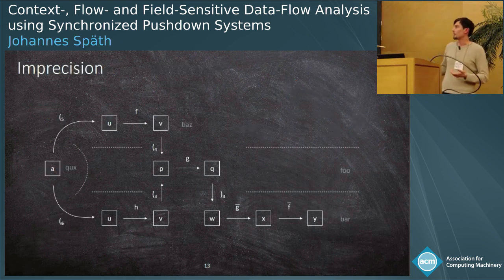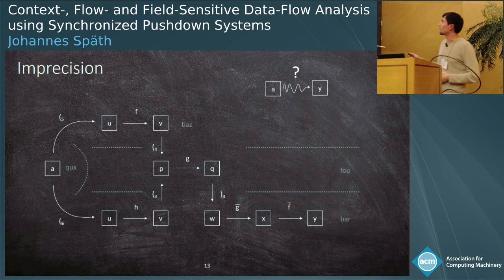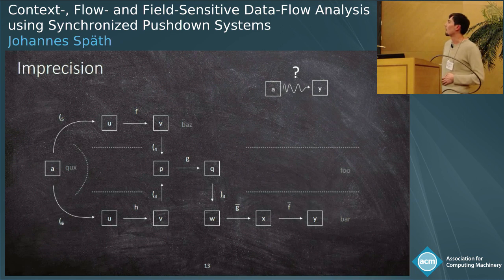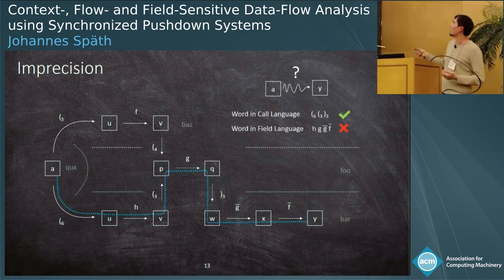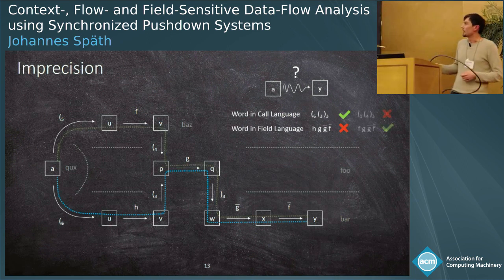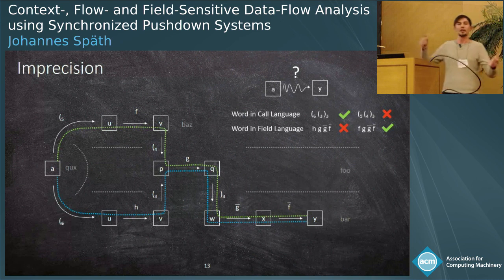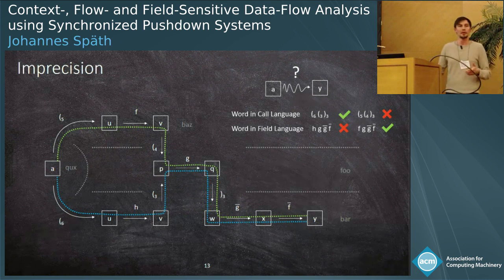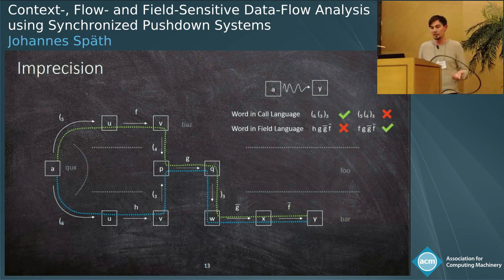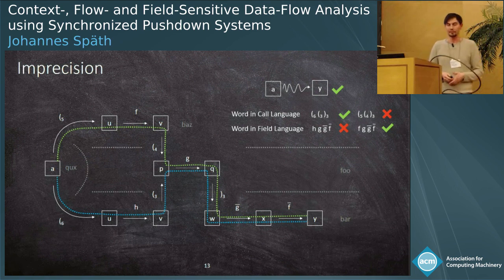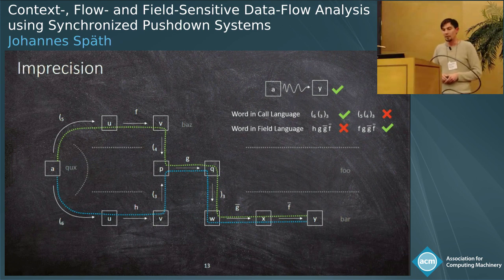And that's exactly where the imprecision happens. On this same extended graph, starting reachability from node A, you can see the blue path from before, but there is a second path where it's exactly the opposite: the path does not form a word in the call language, but it does form a word in the field language. In synchronized pushdown systems, they would tell us yes, it's reachable — whereas at runtime, that can't happen. Fair enough, that's an over-approximation, but we wanted to understand what happens in practice.